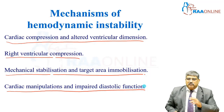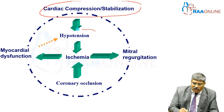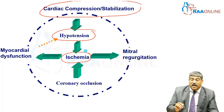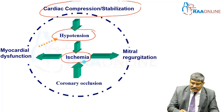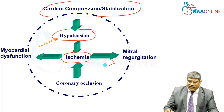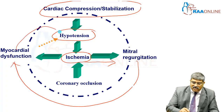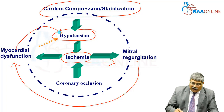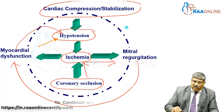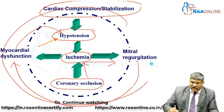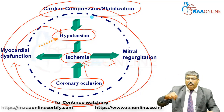Looking at each cause for hemodynamic instability — cardiac compression leads to hypotension, which might aggravate the already ischemic myocardium. This ischemia can lead to ischemic mitral regurgitation, and this regurgitation can aggravate the dysfunction. This dysfunction can cause hypotension, and there is already coronary occlusion which might further aggravate ischemia. So this forms a vicious cycle: hypotension, ischemia, mitral regurgitation, dysfunction, and back to hypotension.